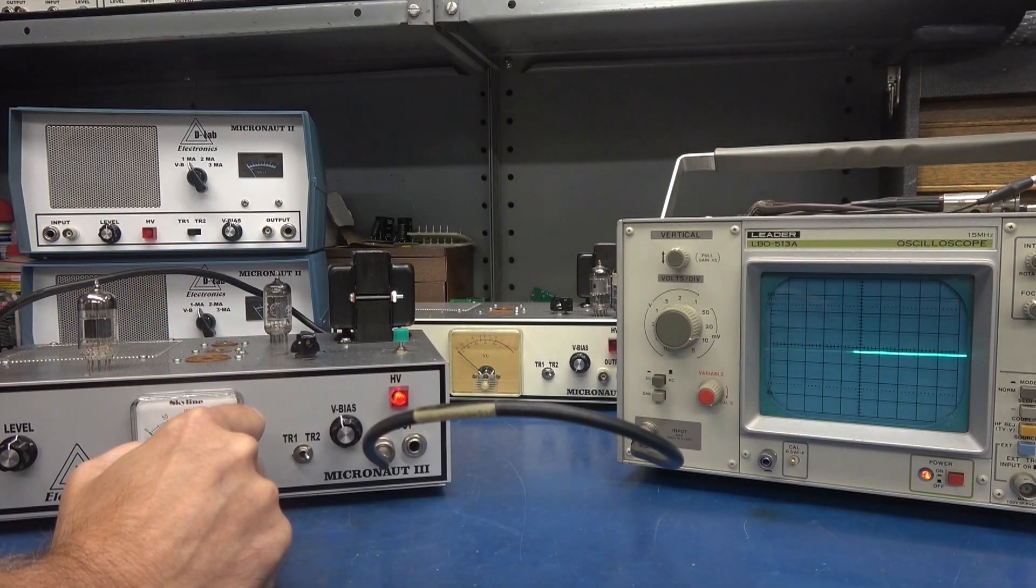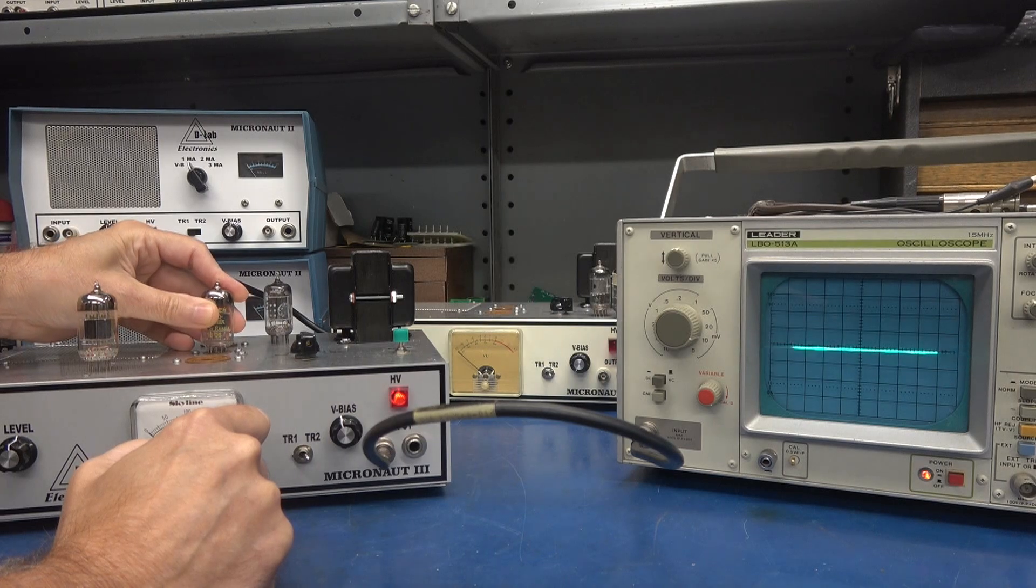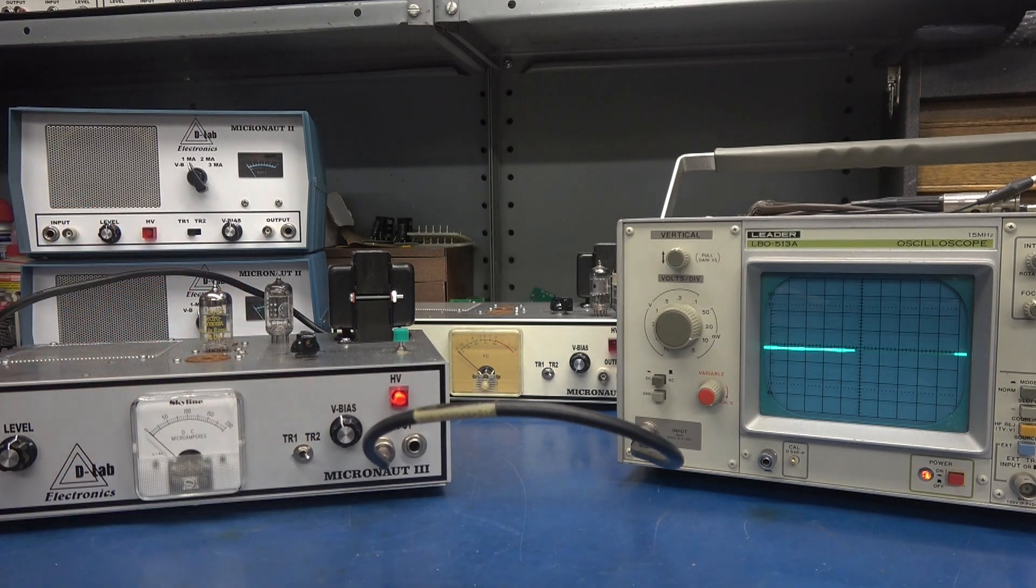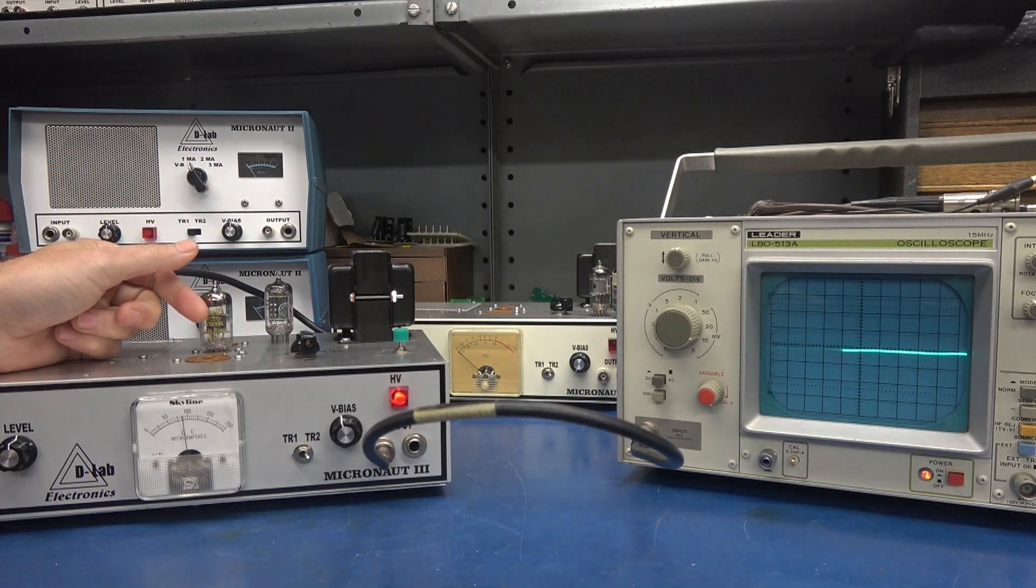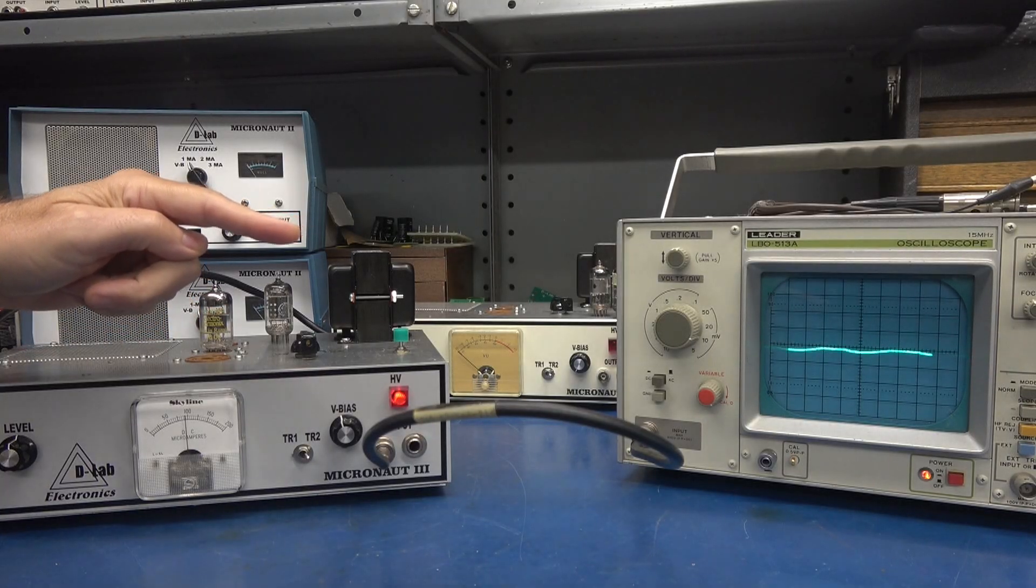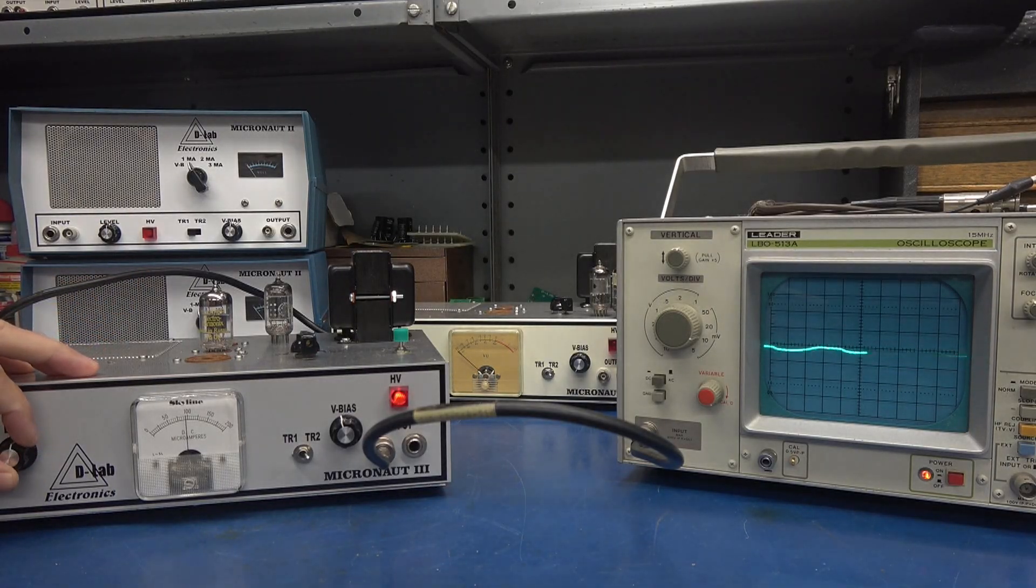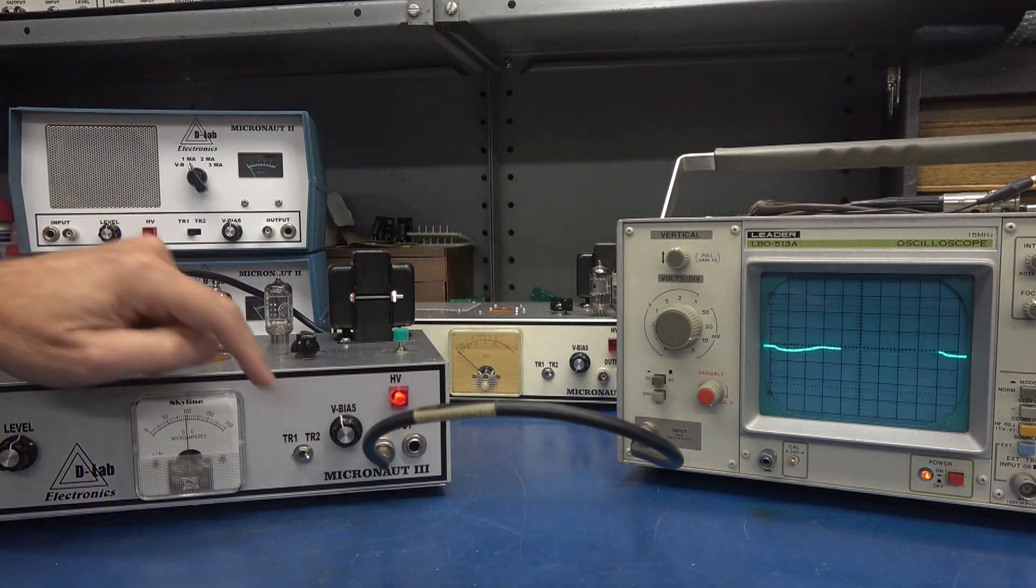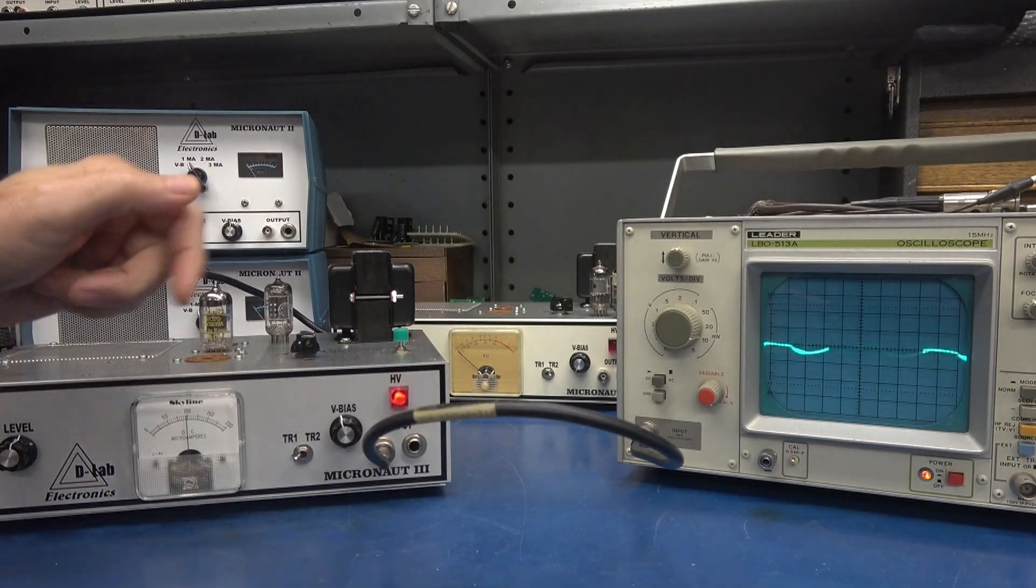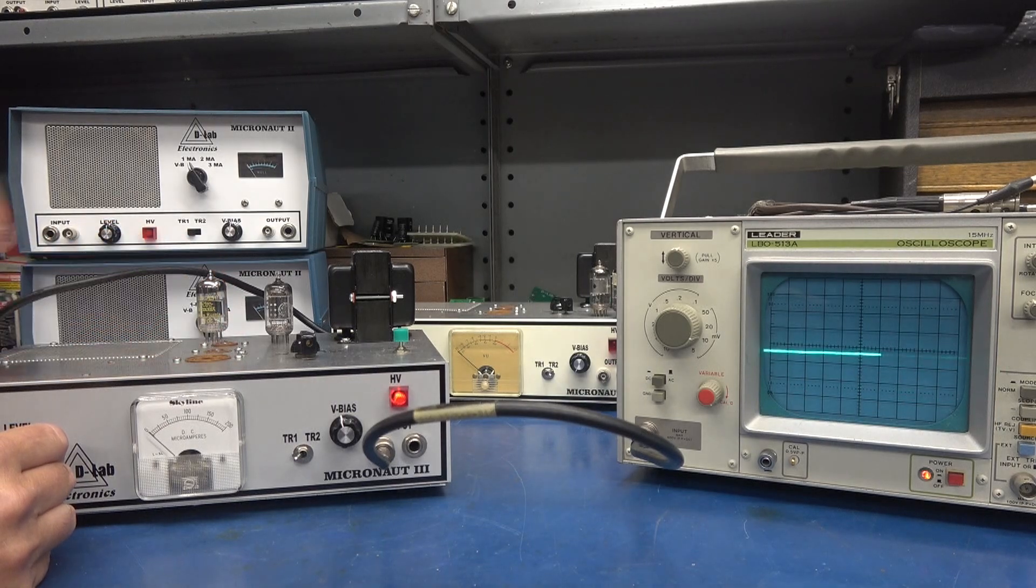Now I have a couple Electroharmonix here that ran a box with a preamp, and he was having rumble issues in his audio. Let's see if we can spot it. Take a look at the scope. Hear that hum? So obviously this one has some heater cathode leakage. There it is.